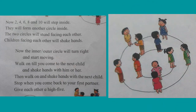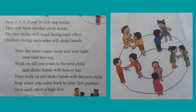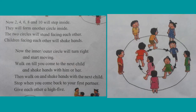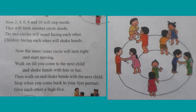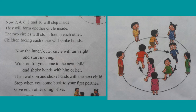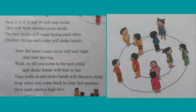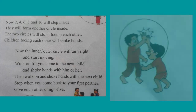They will form another circle inside. The two circles will stand facing each other. Children facing each other will shake hands like this. Now the inner and outer circles will turn right and start moving. Walk on until you come to the next child and shake hands with them. Then walk on and shake hands with the next child. Stop when you come back to your first partner and give each other a high five like this.